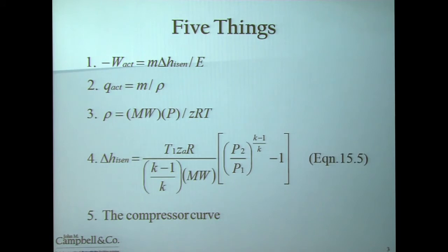If you jump to the denominator of that equation, you have K, which is the ratio of heat capacities at constant pressure divided by the heat capacity at constant volume. You have the molecular weight of your gas. And then in the square brackets, you have your ratio of your discharge pressure to your suction pressure, all to the power of K minus 1 over K, and K, again, is the ratio of heat capacities, all minus 1.